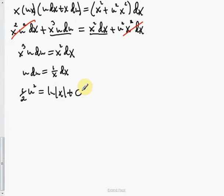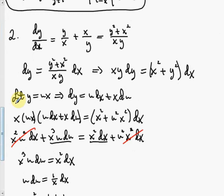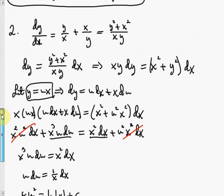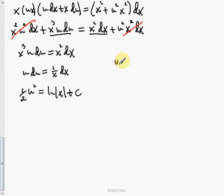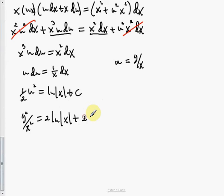Now we replace u with what it was: u equals y over x. So one half times (y over x) squared equals natural log |x| plus C. Multiplying everything by 2 gives y squared over x squared equals 2 natural log |x| plus 2C — and 2C is just C, I'm being dramatic.